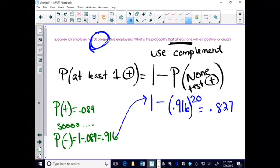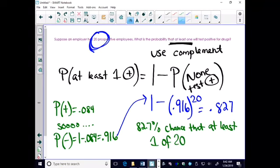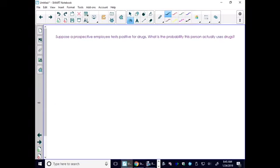So we can take one minus 0.916 to the 20th power. This is using the assumption that each person is independent of the next. And we get a final answer of 82% chance that at least one person tests positive.